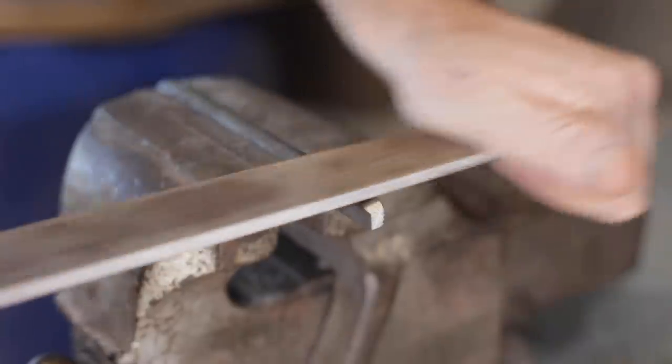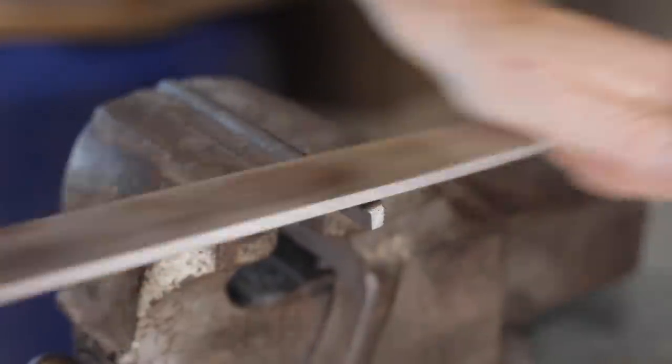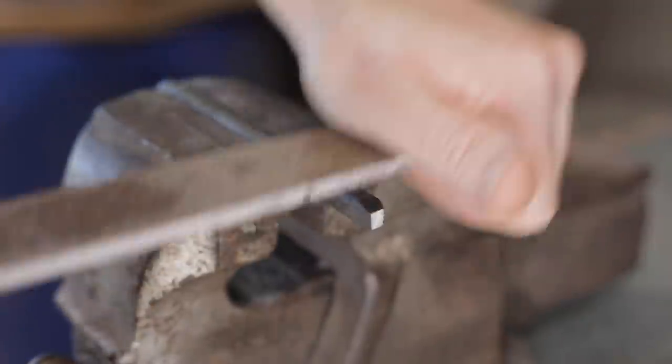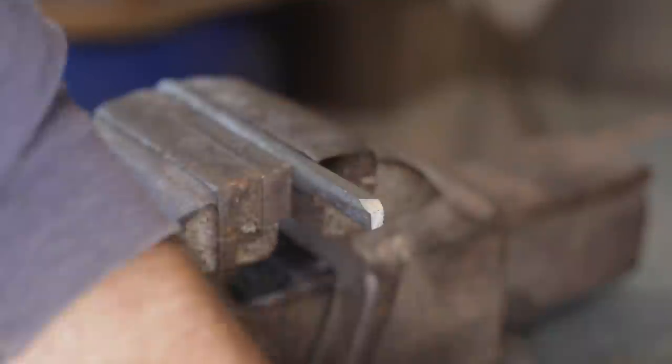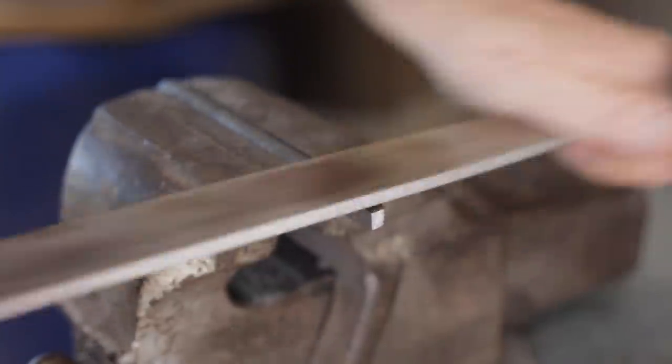Now I'm going to file the shoulders onto the end, ready to weld the pieces on to make up the box. I could have done this on the belt grinder, but I don't trust myself, so I'm doing it with the file. I'm checking regularly, and hopefully I get it just right.